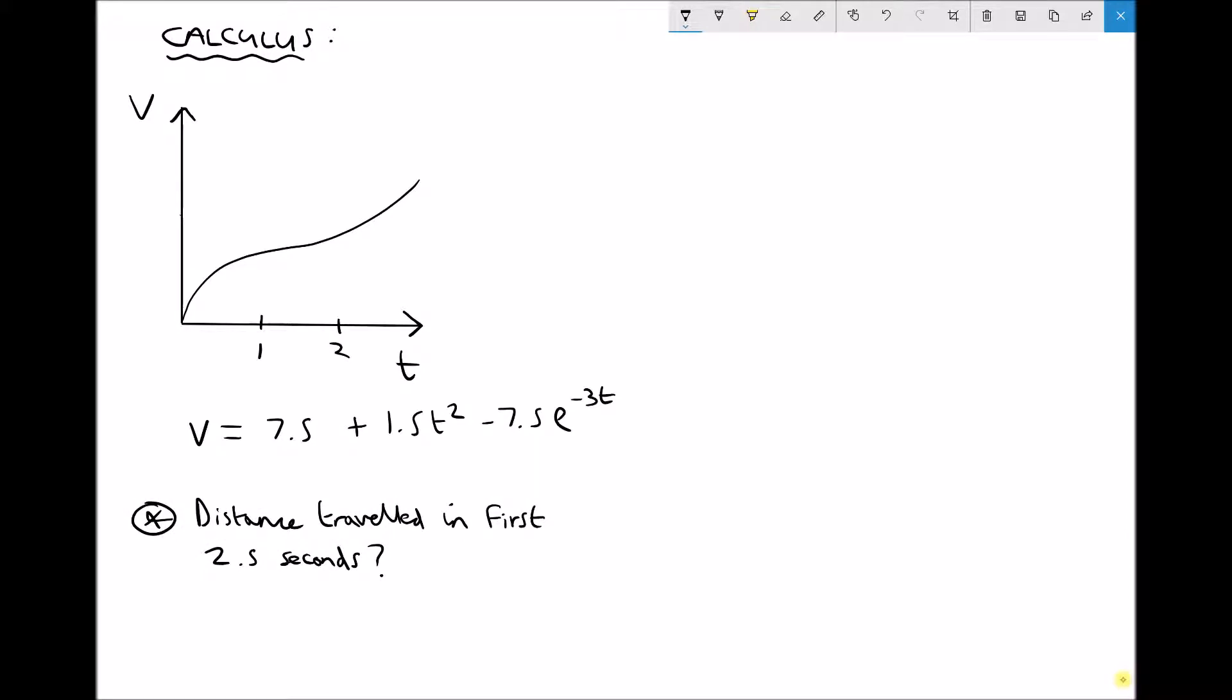So the first thing that we need to do is consider what that's actually asking us. If we have a velocity time graph and we want distance, distance is velocity times time. And if we're multiplying these two variables together, so we're multiplying our velocity on the y axis by our time on the x axis, then what we're actually finding is the area under the function here.